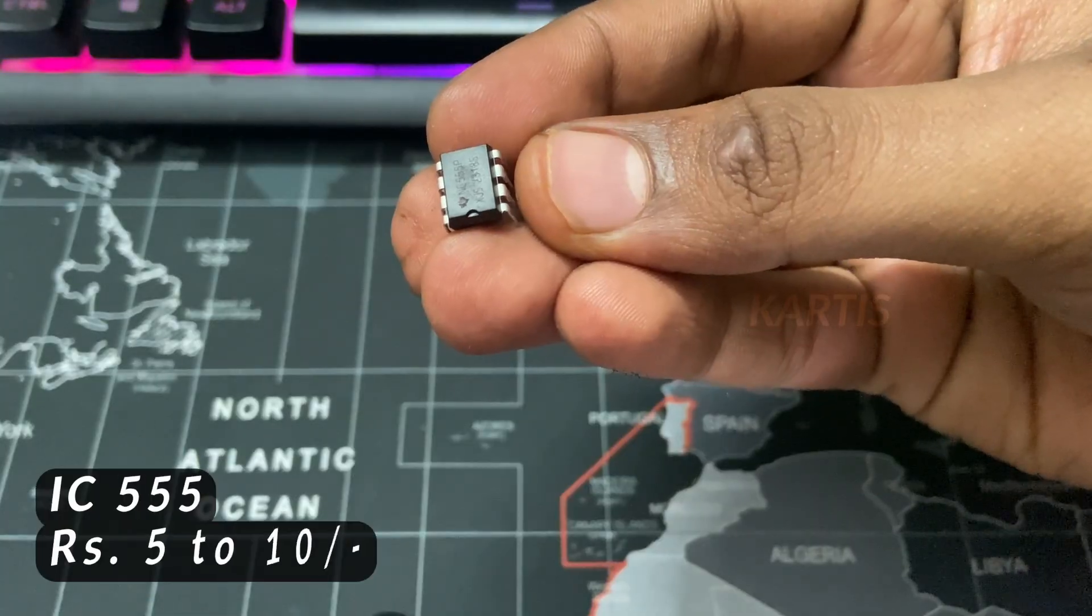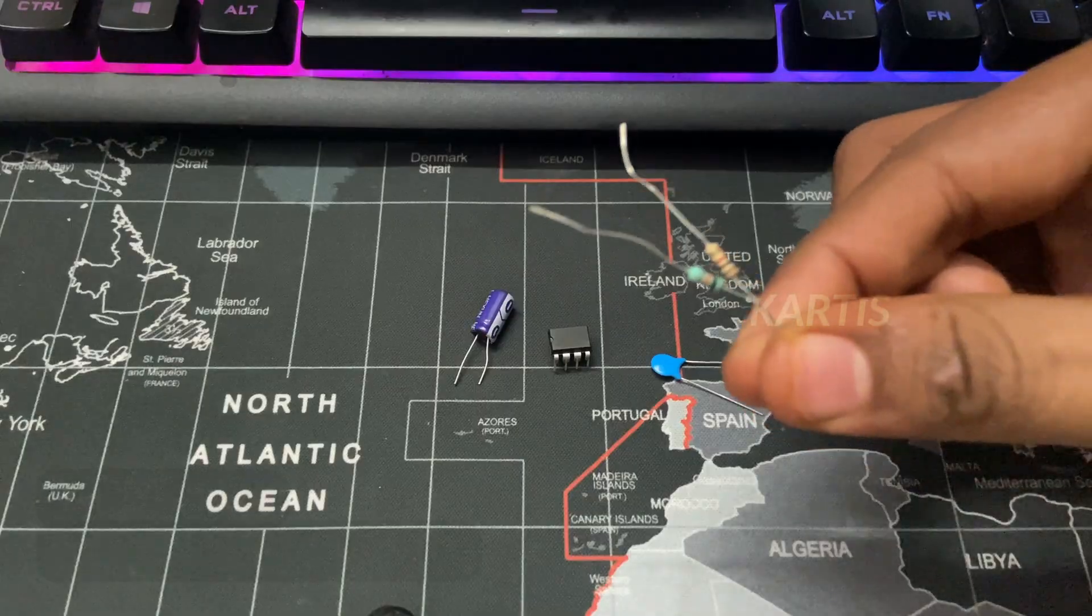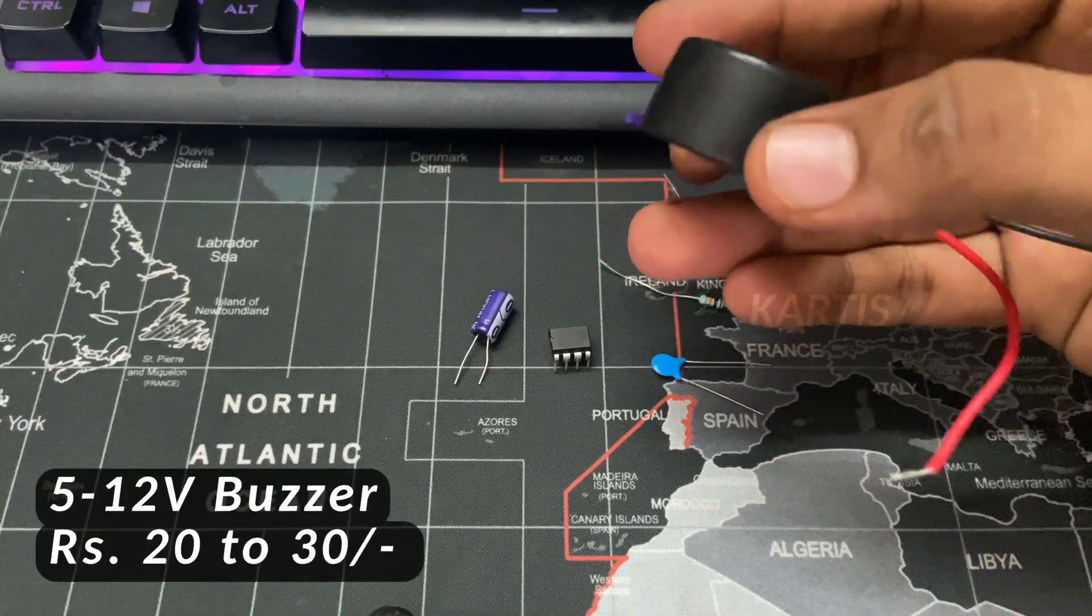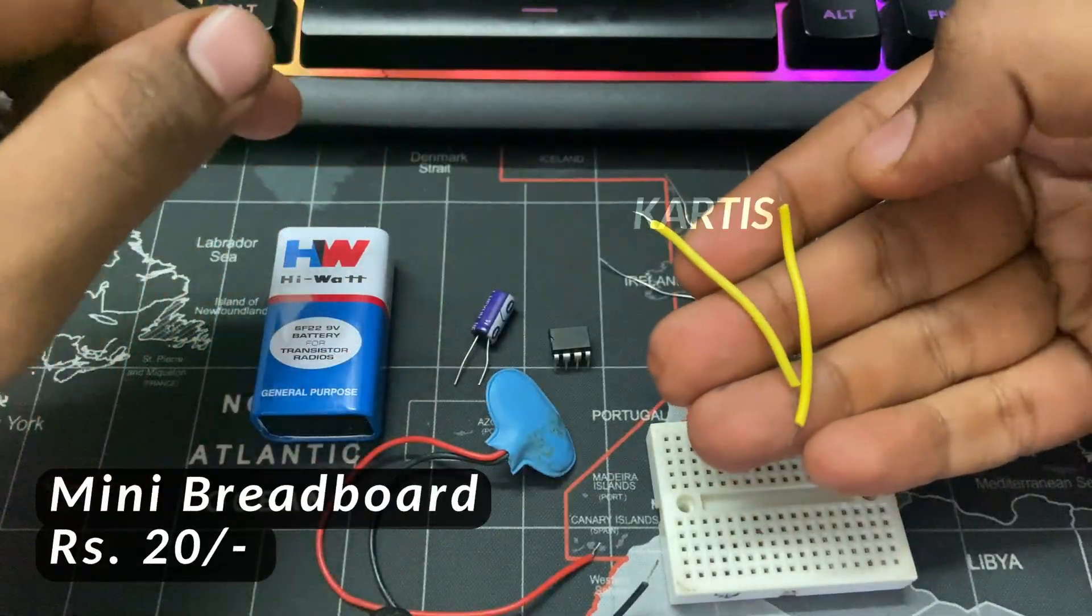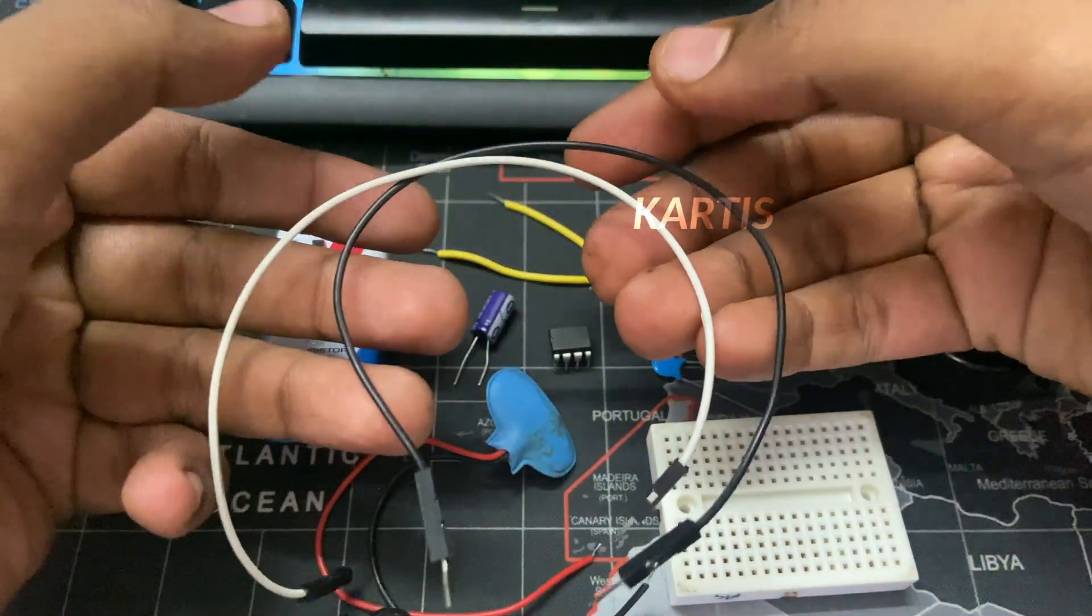The components are 555 timer IC, 2 capacitors, 2 resistors, 12 volt buzzer, 9 volt battery, battery connector, breadboard and jumper wires. That's it guys.